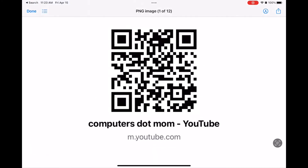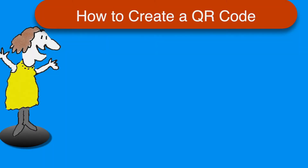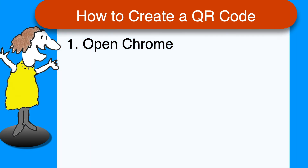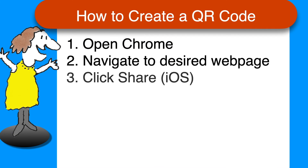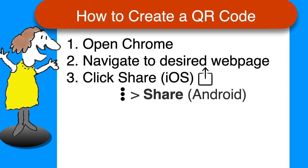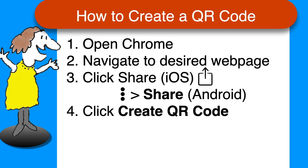Here's a quick recap of the steps on one page for convenience, with the variations for Android devices. On any mobile device, open Chrome and navigate to the page for which you want to create the QR code. Click the share button if you're on an iPhone or iPad. On an Android device, tap the three vertical dots menu and then tap share.